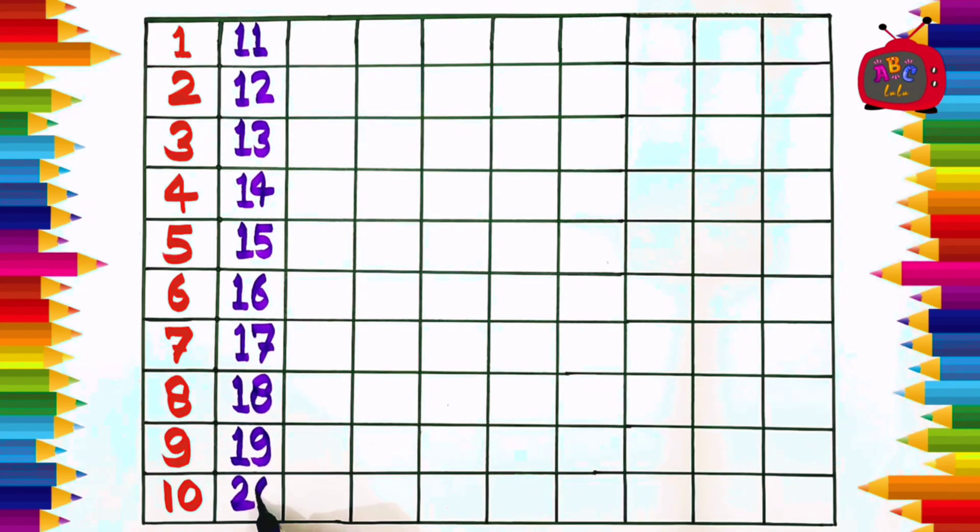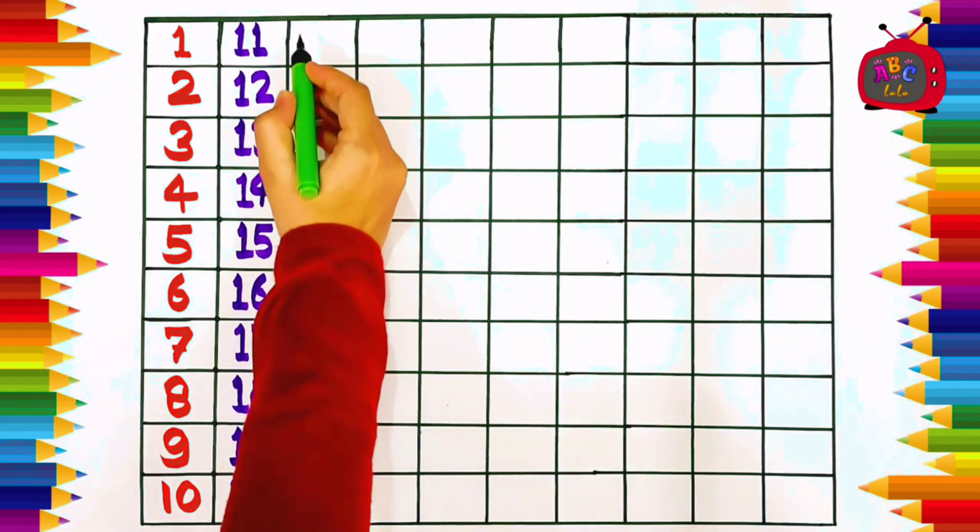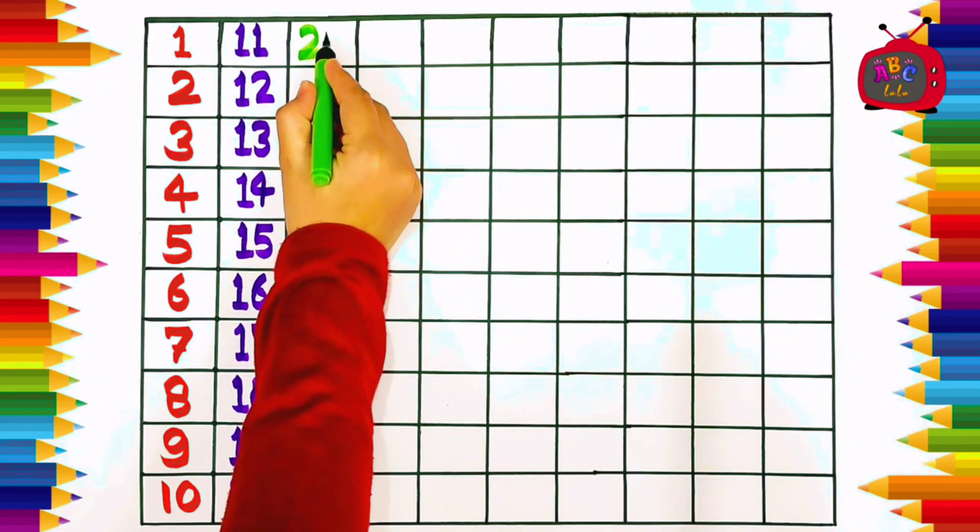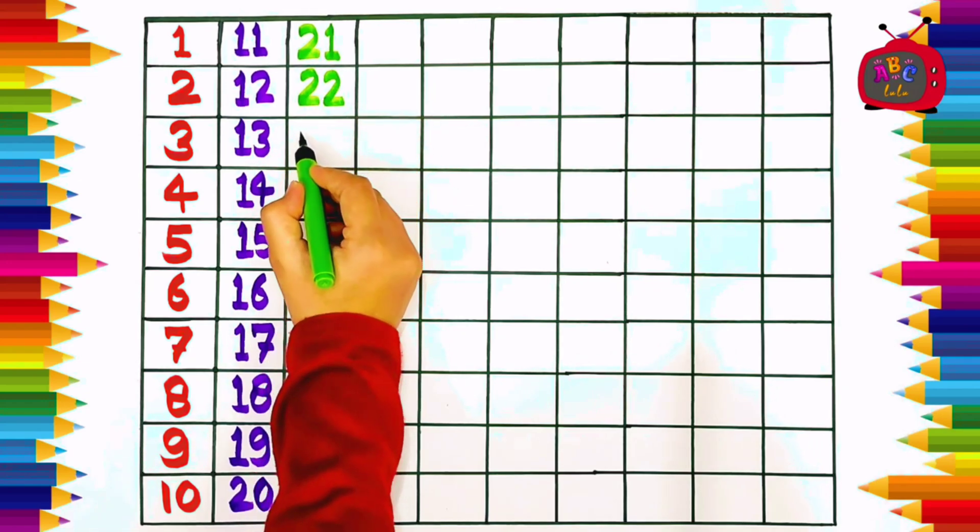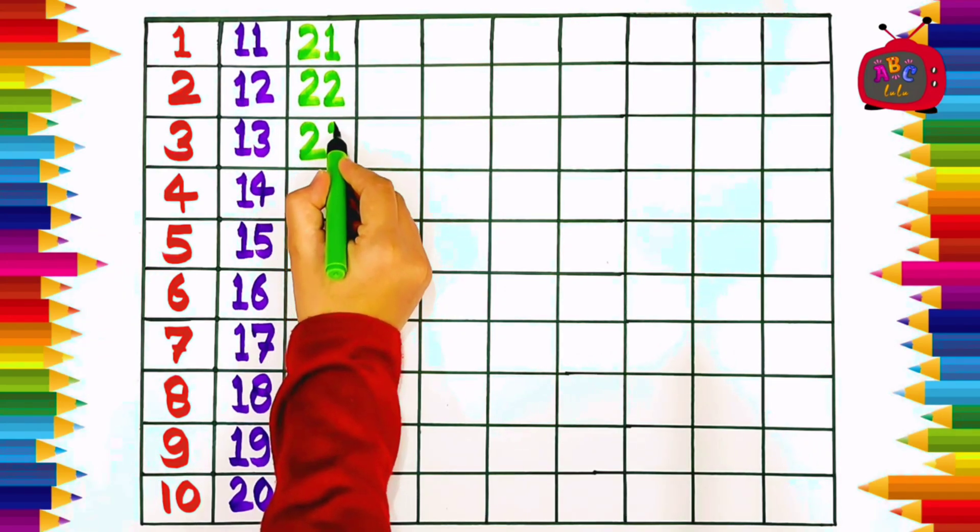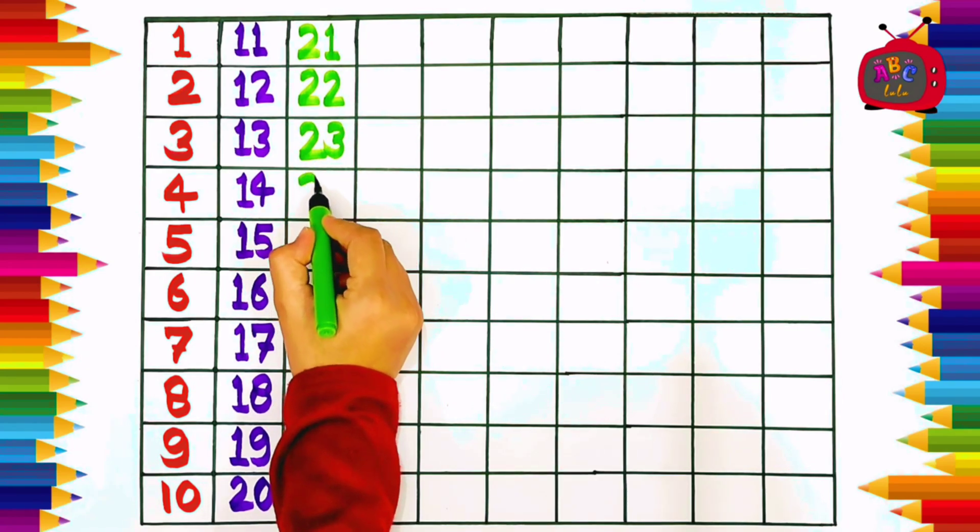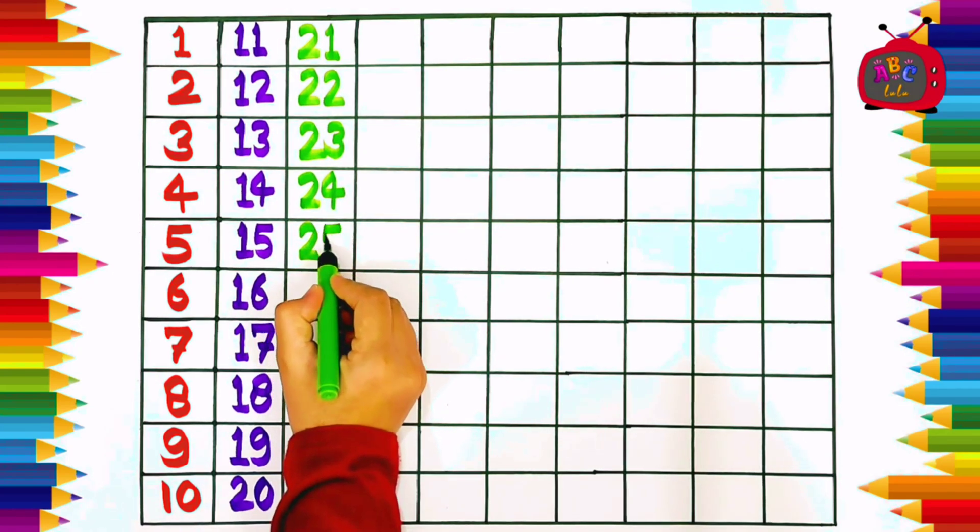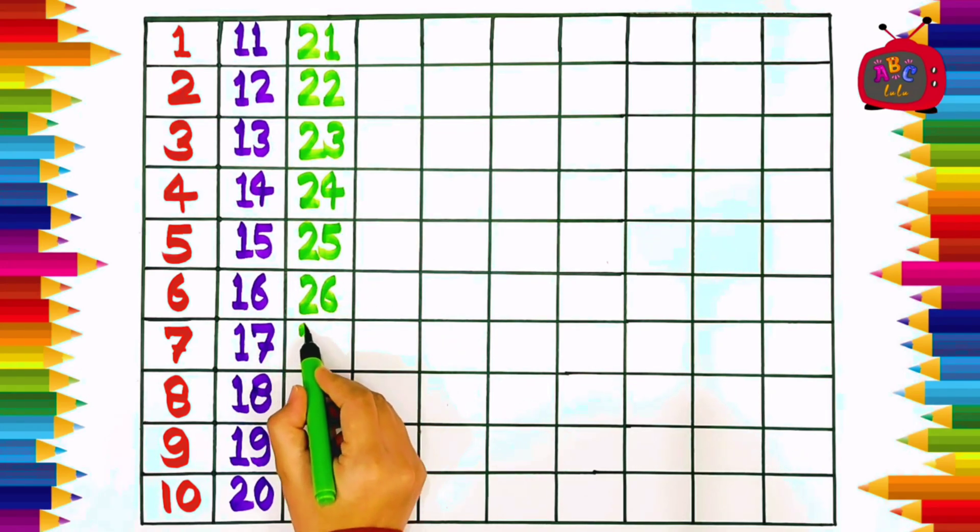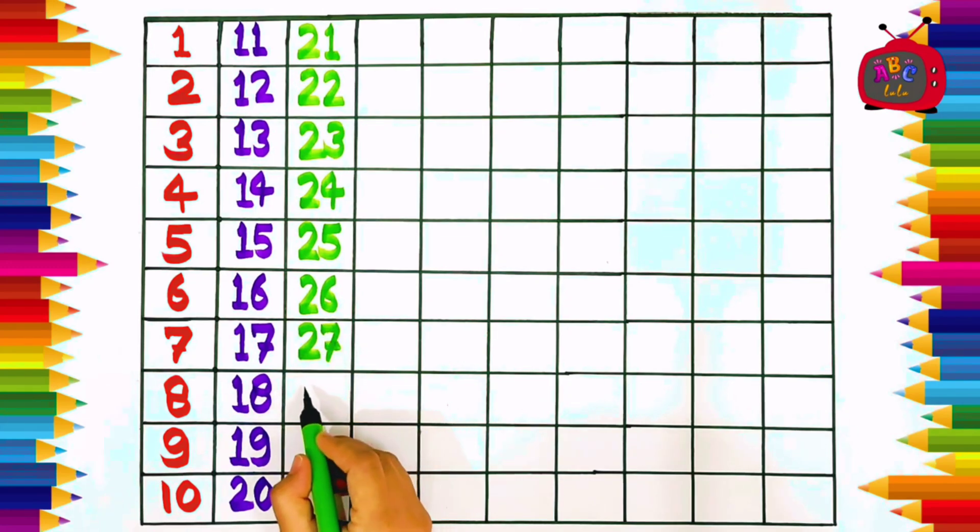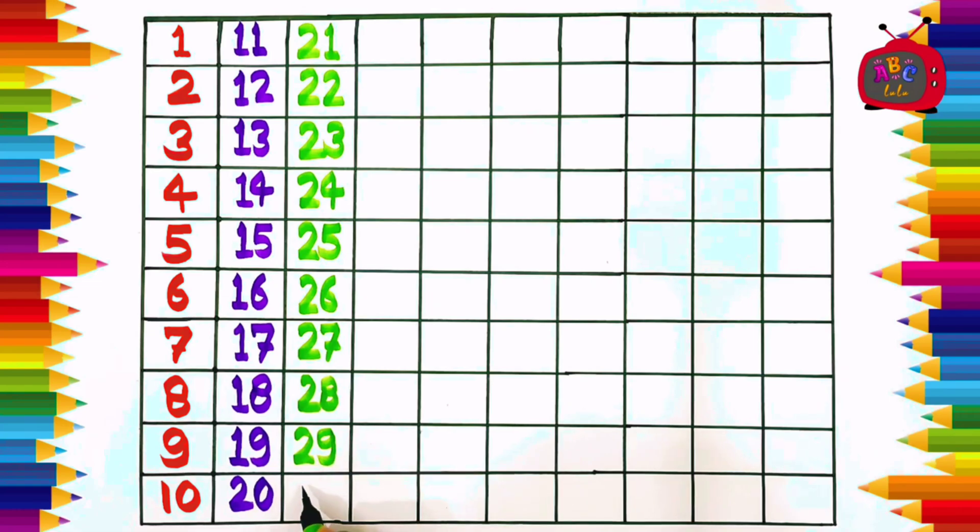Two zero, twenty. Two one, twenty-one. Two two, twenty-two. Two three, twenty-three. Two four, twenty-four. Two five, twenty-five. Two six, twenty-six. Two seven, twenty-seven. Two eight, twenty-eight. Two nine, twenty-nine. Three zero, thirty.